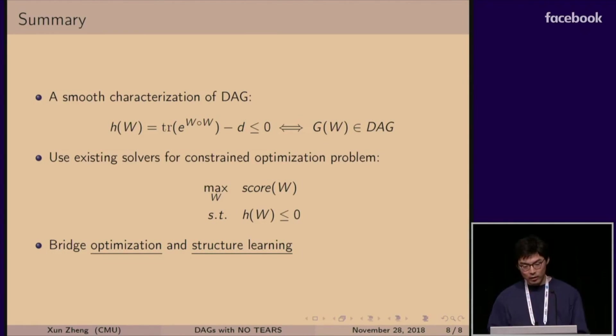So to summarize, we propose a novel smooth characterization of DAGs, and use existing numerical solvers to solve this optimization problem. So we are building, bridging between optimization and structure learning. So if you think the paper is great, you should come to our poster, and we'll share with you some secret limitations. Thanks.